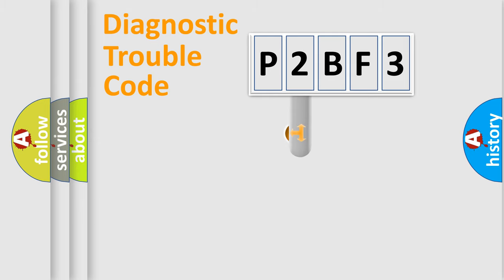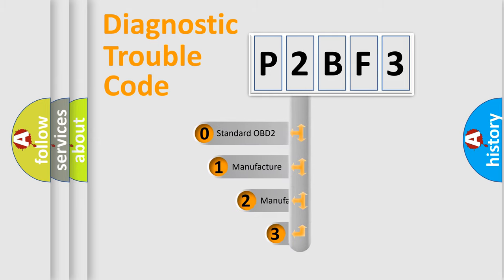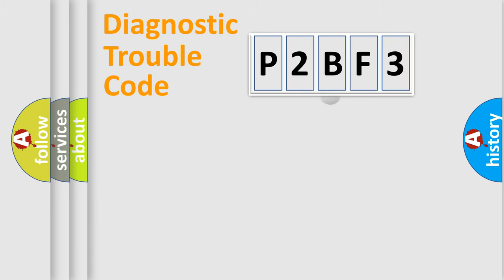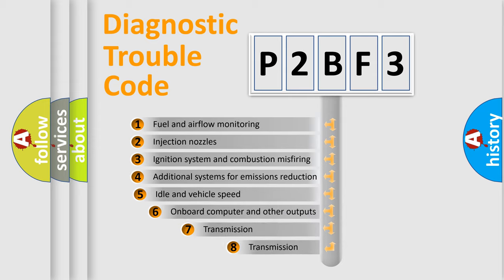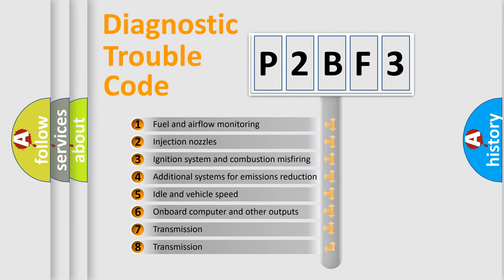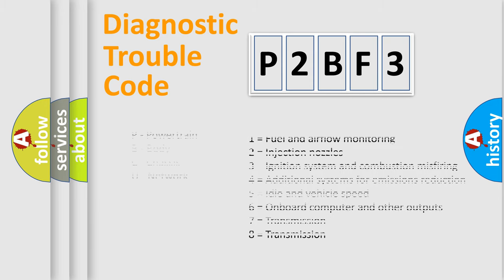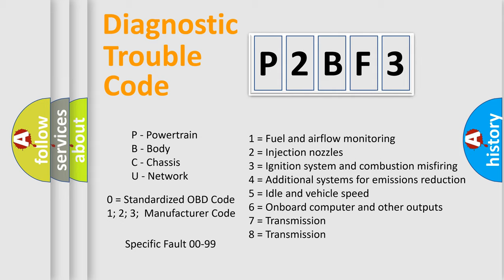This distribution is defined in the first character code. If the second character is expressed as zero, it is a standardized error. In the case of numbers 1, 2, or 3, it is a car-specific error. The third character specifies a subset of errors. The distribution shown is valid only for the standardized DTC code. Only the last two characters define the specific fault of the group. Let's not forget that such a division is valid only if the second character code is expressed by the number zero.